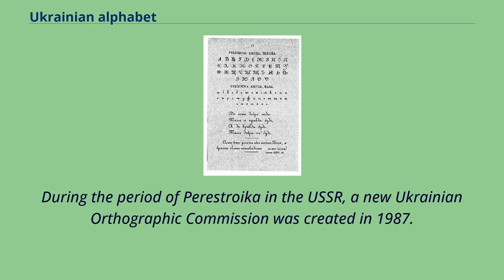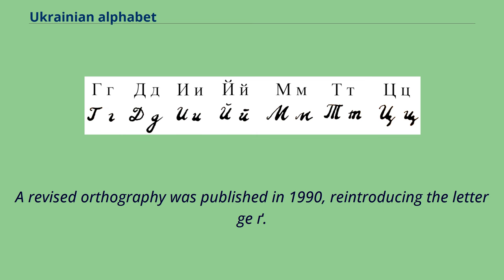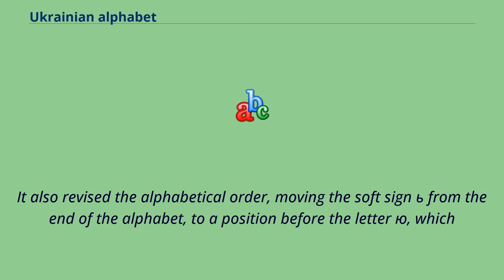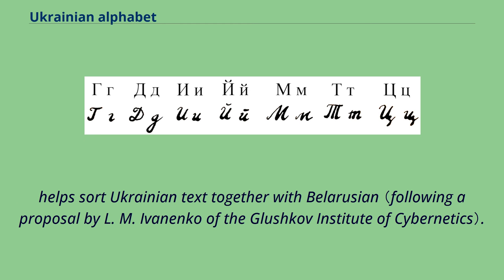During the period of perestroika in the USSR, a new Ukrainian orthographic commission was created in 1987. A revised orthography was published in 1990, reintroducing the letter ge. It also revised the alphabetical order, moving the soft sign from the end of the alphabet to a position before the letter, which helps sort Ukrainian text together with Belarusian.